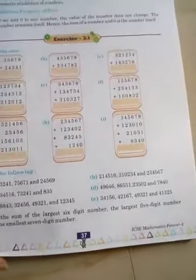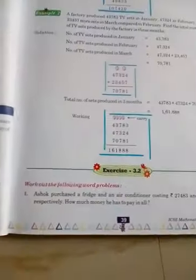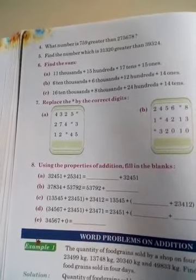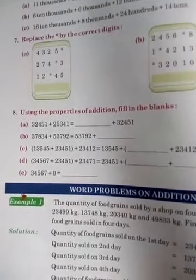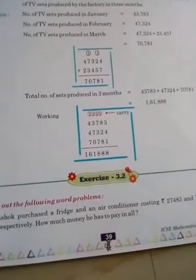Now come to homework. What is your homework? Do question number one, Exercise 3.1, questions 1, 2, 3, 4, 5, and 6 in your copy. In the next class we are going to do the properties and the problem sums of this chapter.